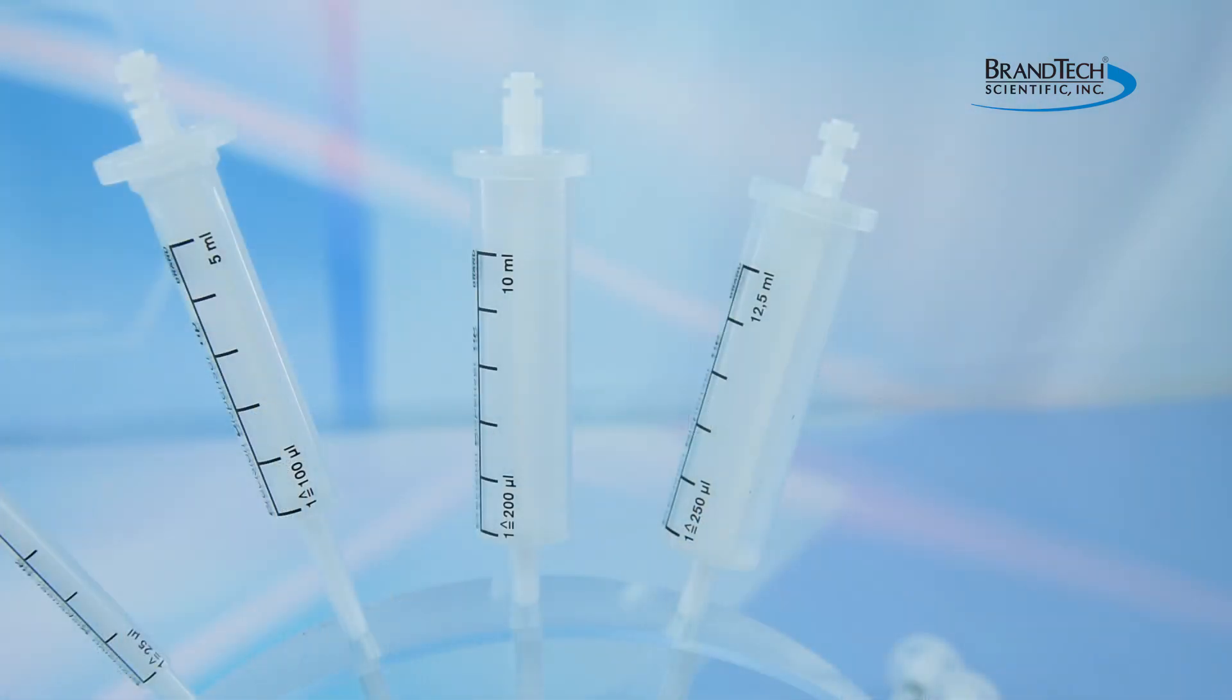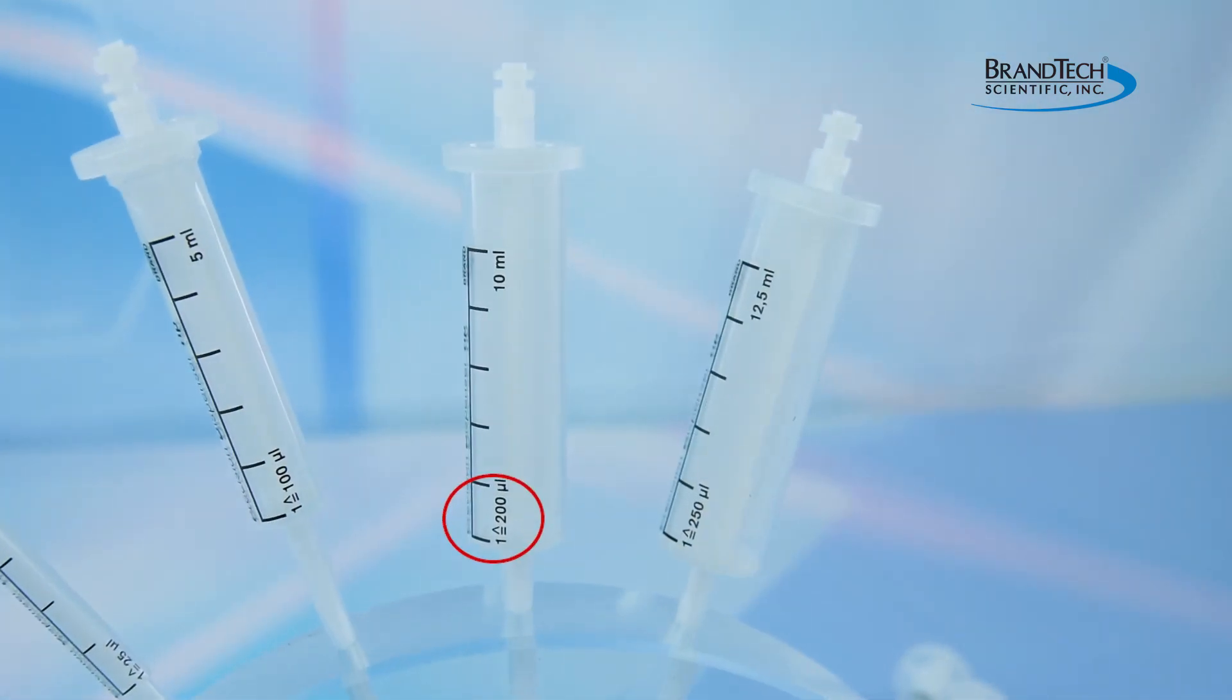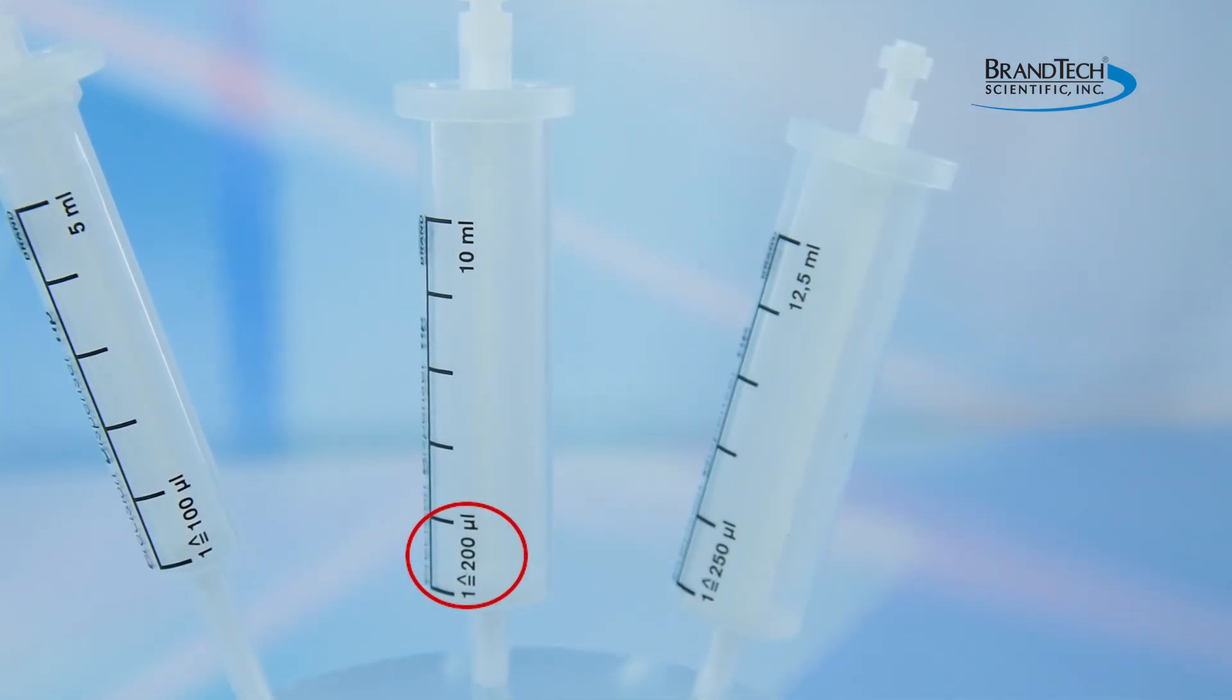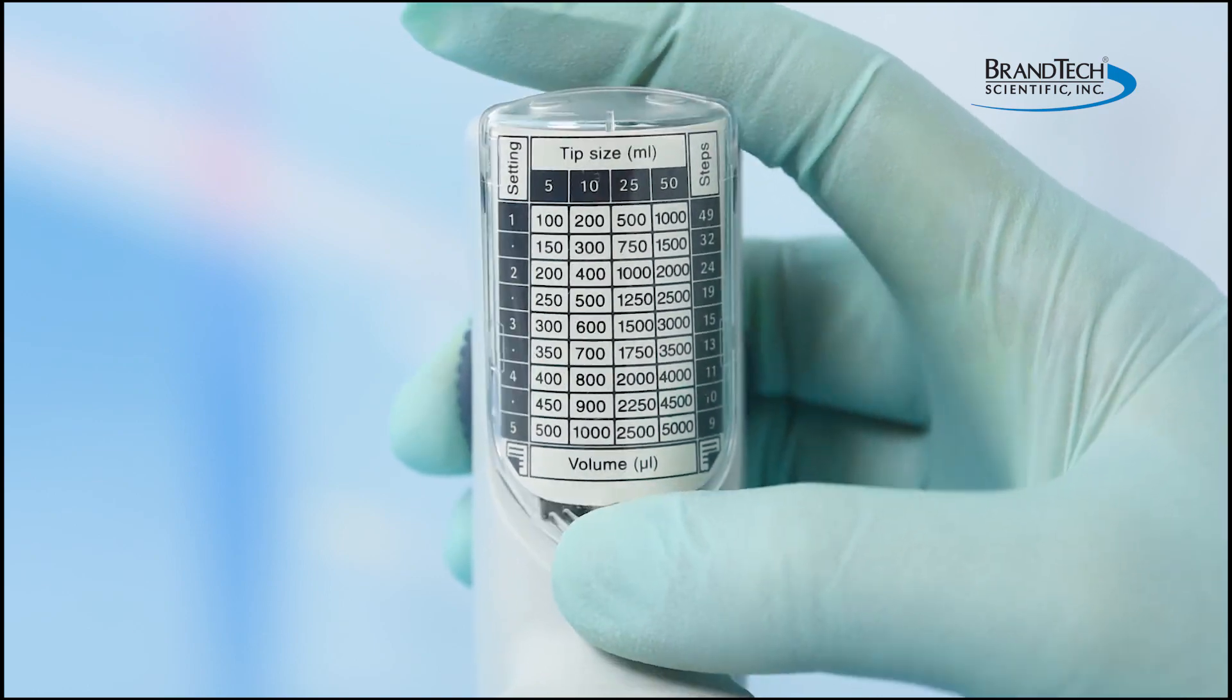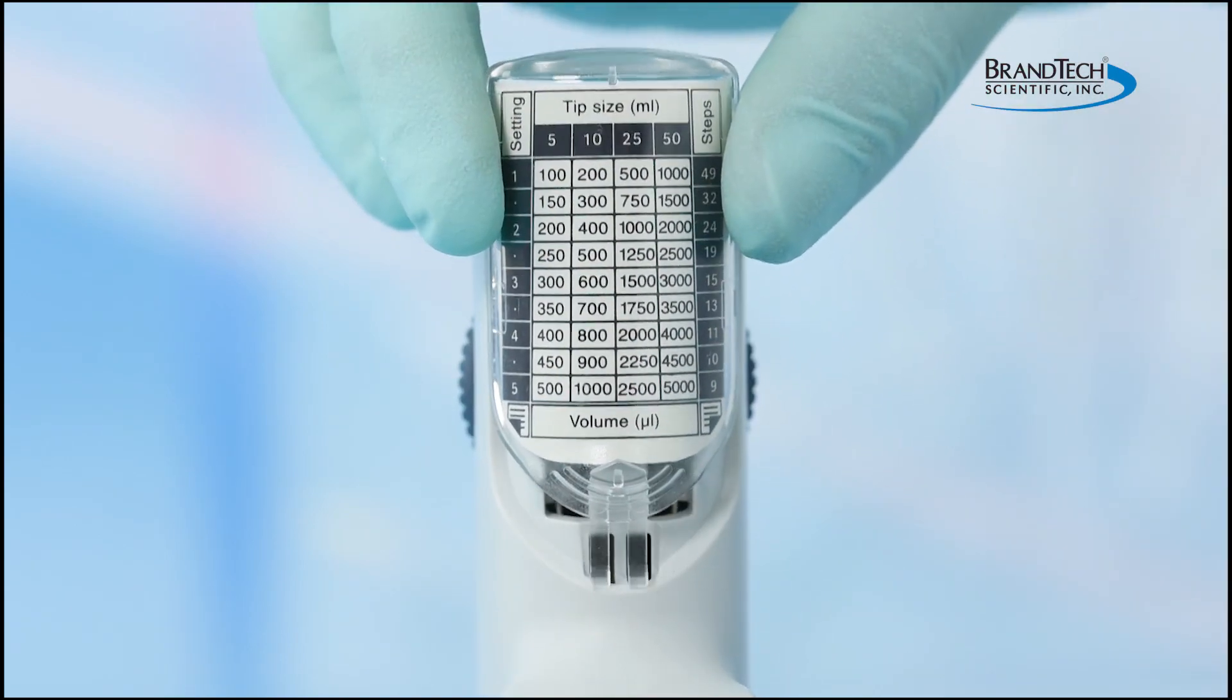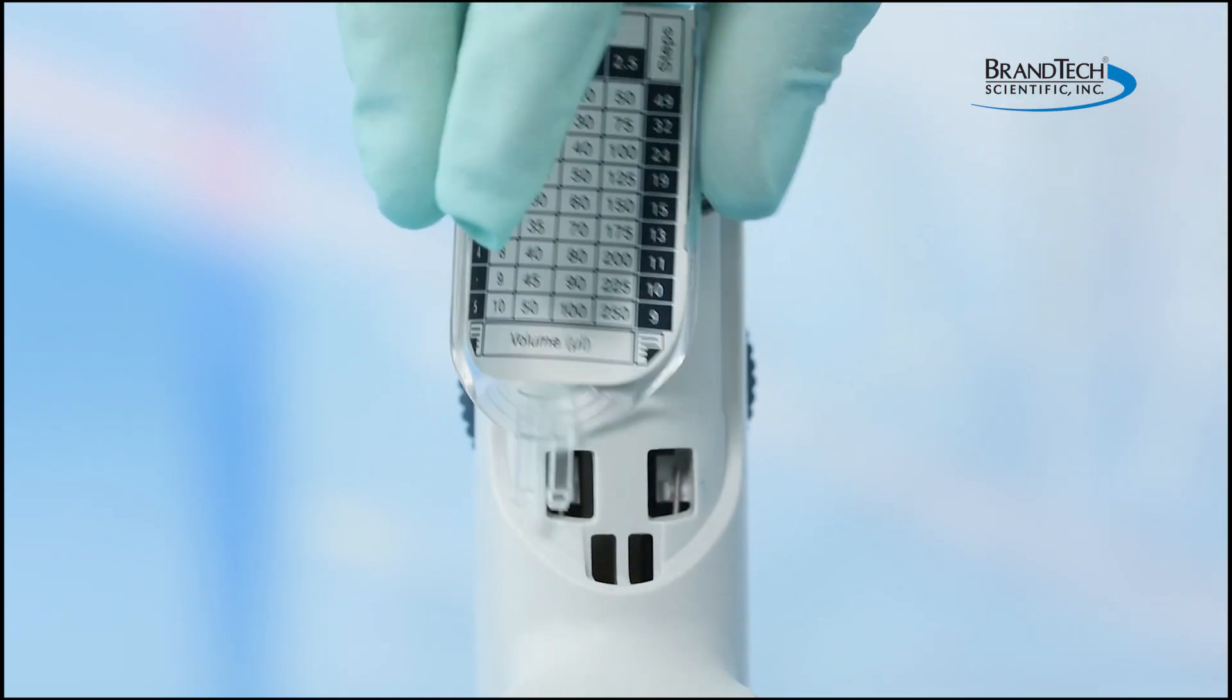To determine the volume dispensed, note the partial volume printed on the PD tip and multiply it by the settings shown on the adjustment wheel. Alternatively, a two-sided chart on the HandyStep S provides a convenient reference.